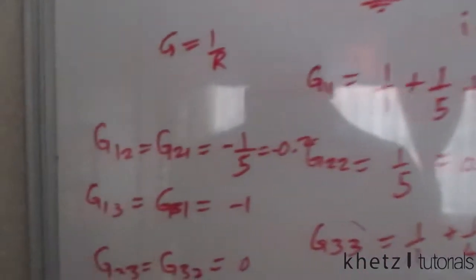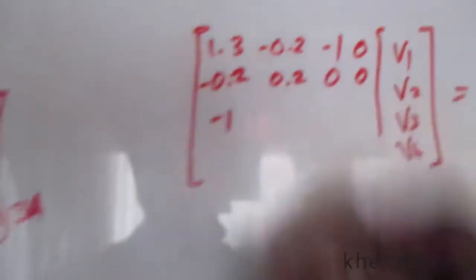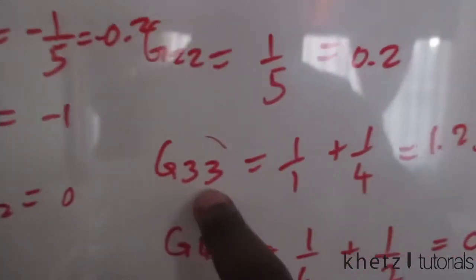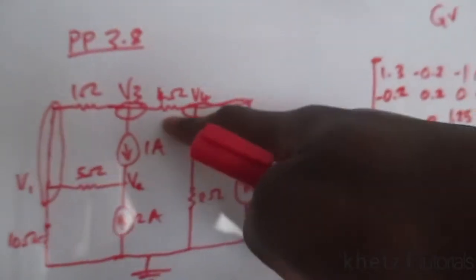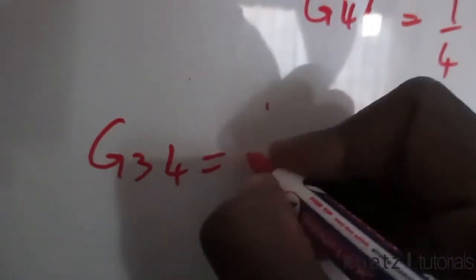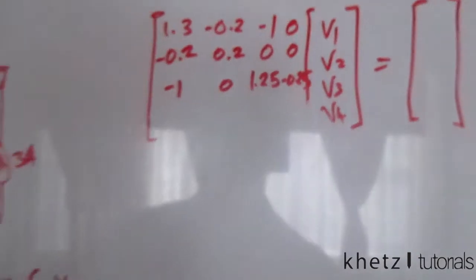Row 3: column 1 is −1, column 2 is 0, column 3 (G_33) is 1.25. Between nodes 3 and 4 we have a 4-ohm resistor, so G_34 = G_43 = −1/4 = −0.25. Row 3 is [−1, 0, 1.25, −0.25].